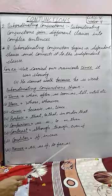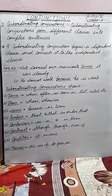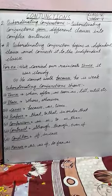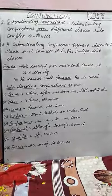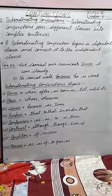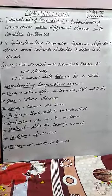To show manner, we use 'as', 'as if', and 'so far as'. In our next video, we will learn some more types of conjunctions. Thank you.